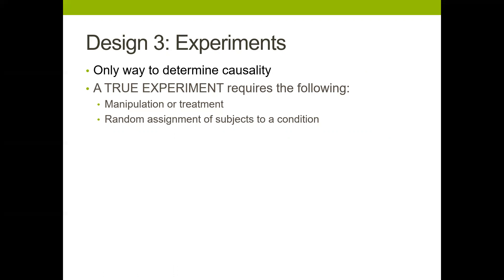How do you decide who gets the manipulation or medicine and who doesn't? You have to use what we call random assignment. By random, we just mean by chance. So by chance, individuals would be assigned to group A — taking the medicine — or group B — not taking the medicine, or taking a fake medicine, a placebo.